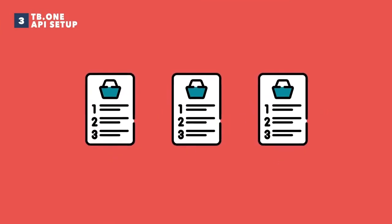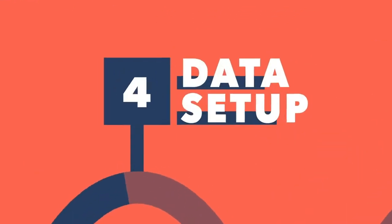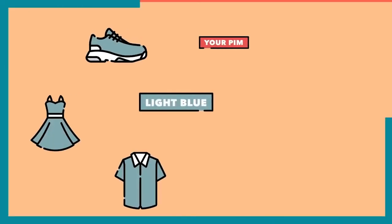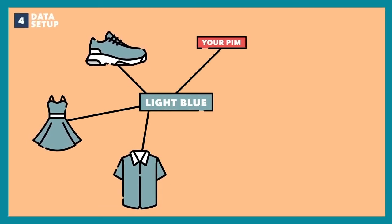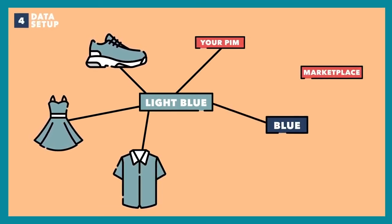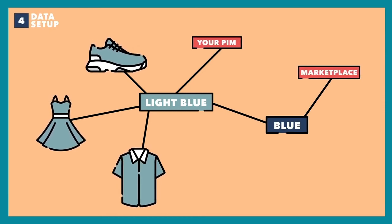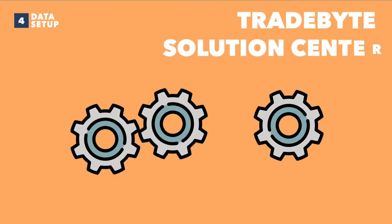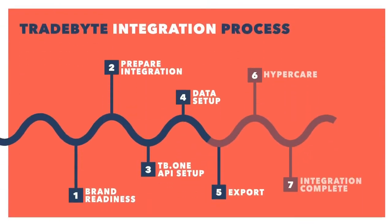And we can proceed to Step four: data setup. Here you categorize and map your data according to the requirements of the channel. For example, you may have to map the color value of your shoe from light blue to blue. Don't worry — the Tradebyte Solutions Center has all the information you need to help you prepare your data in the right way for the channel.